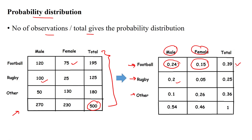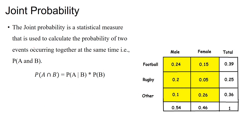We find the total number of audience for football, total for rugby, and total for other events. The total probability will be 1, meaning all people fall under total probability 1. Joint probability is used when two events occur simultaneously — for example, both football and rugby being watched by people at the same time.